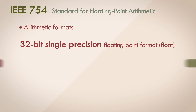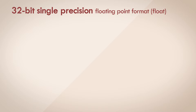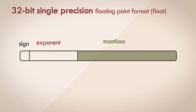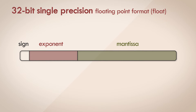Let's look at the 32-bit single precision floating point format first. We know that 32 bits should contain the mantissa, the exponent, and the sign bit. This is how the standard defines the layout: the leftmost bit contains the sign bit, which represents the sign of the number — either positive or negative. The following 8 bits represent the exponent, and the remaining 23 bits represent the mantissa.